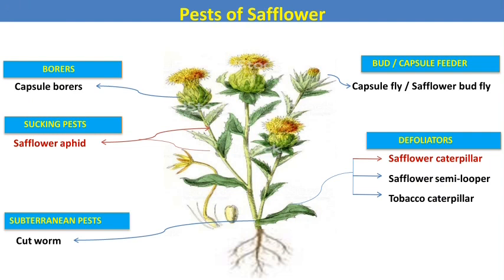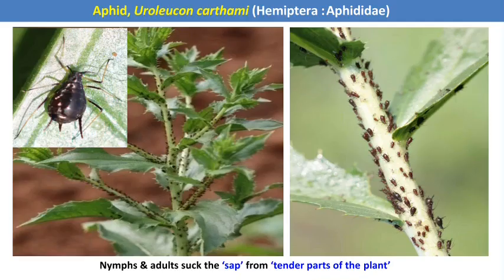The next oilseed crop is safflower. In safflower, the safflower aphid is the major pest. The scientific name is Uroleucon carthami. It is a major sucking pest of safflower. It reproduces parthenogenetically or viviparously — meaning instead of egg laying, the female aphid directly gives birth to young ones.